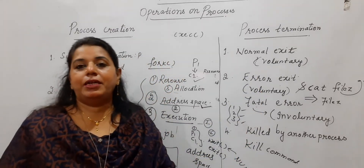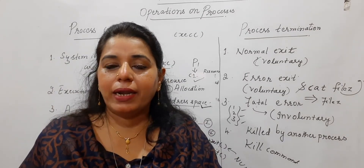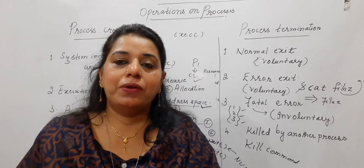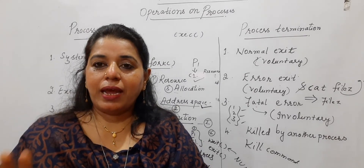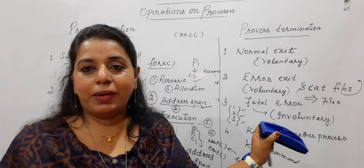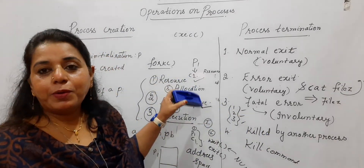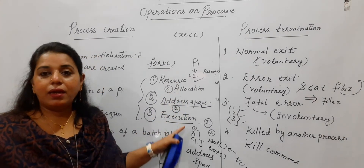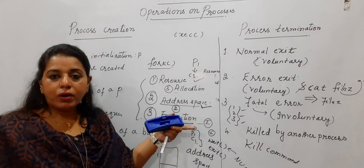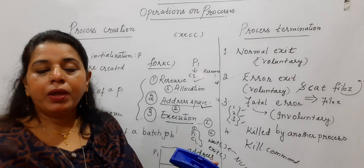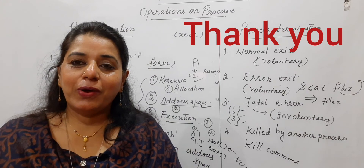This is all about process termination. For process hierarchies, I will add a diagram at the end of the video with an explanation. To summarize: process creation happens under four principal events, and process termination also happens under four principal events. For the fork system call, remember what happens to the child process across three aspects. The key system calls are FORK, EXEC, EXIT, and WAIT. Hope this session is useful to you all. Thank you, bye-bye, take care.